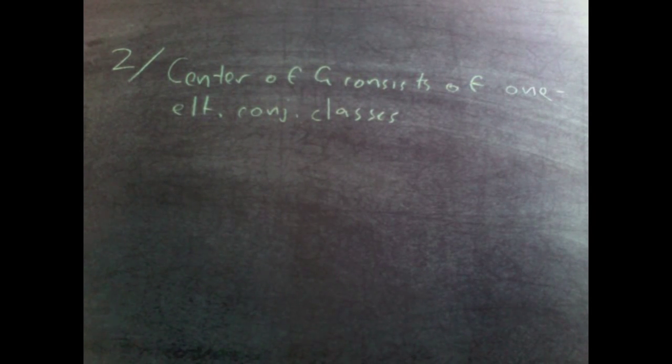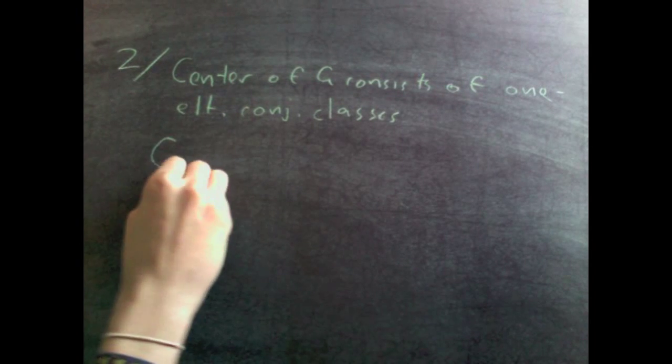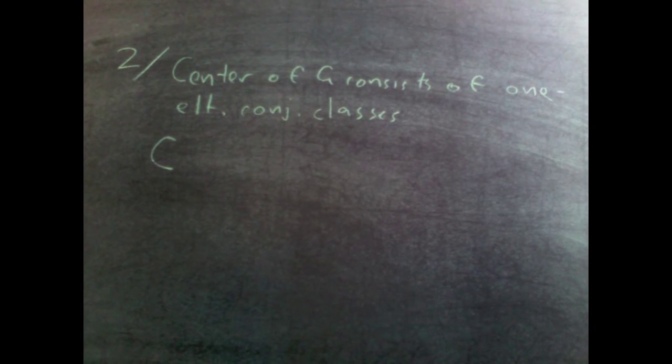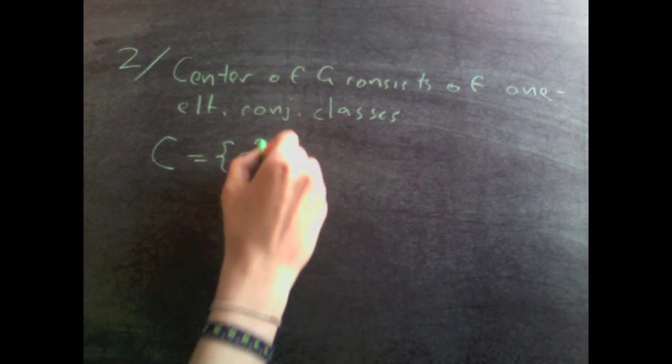And now I'll show you that the center of g consists of one element conjugacy classes. So consider a one element conjugacy class. By that I just mean a conjugacy class which just has one element in it. Let's say that element is a.